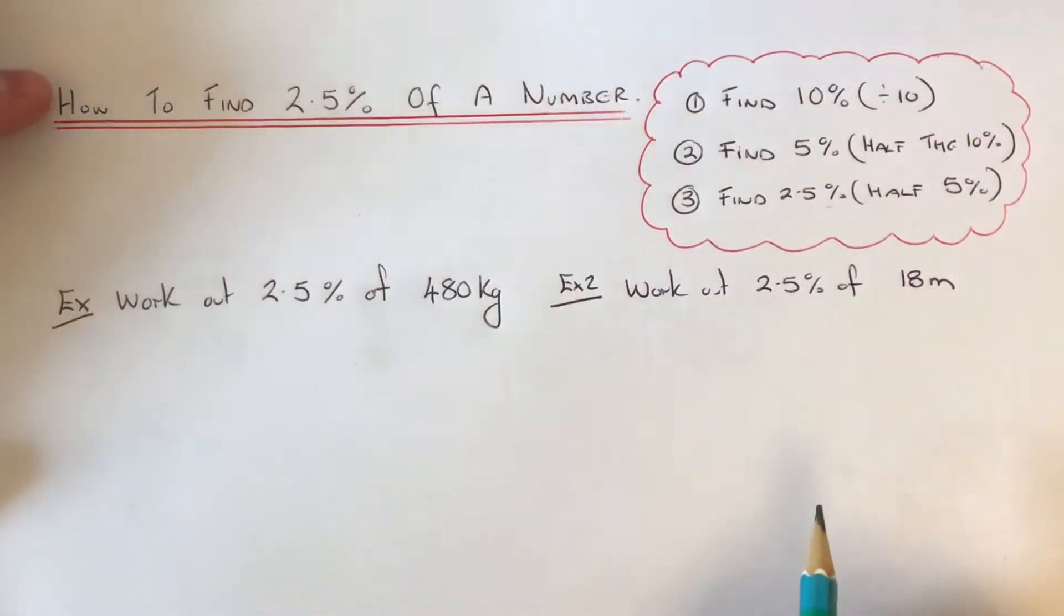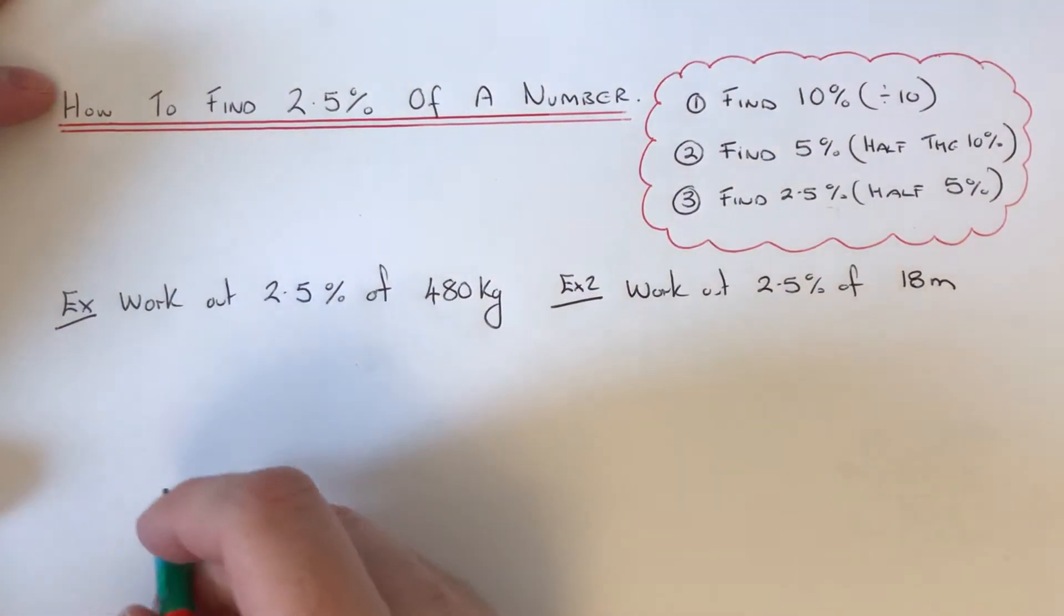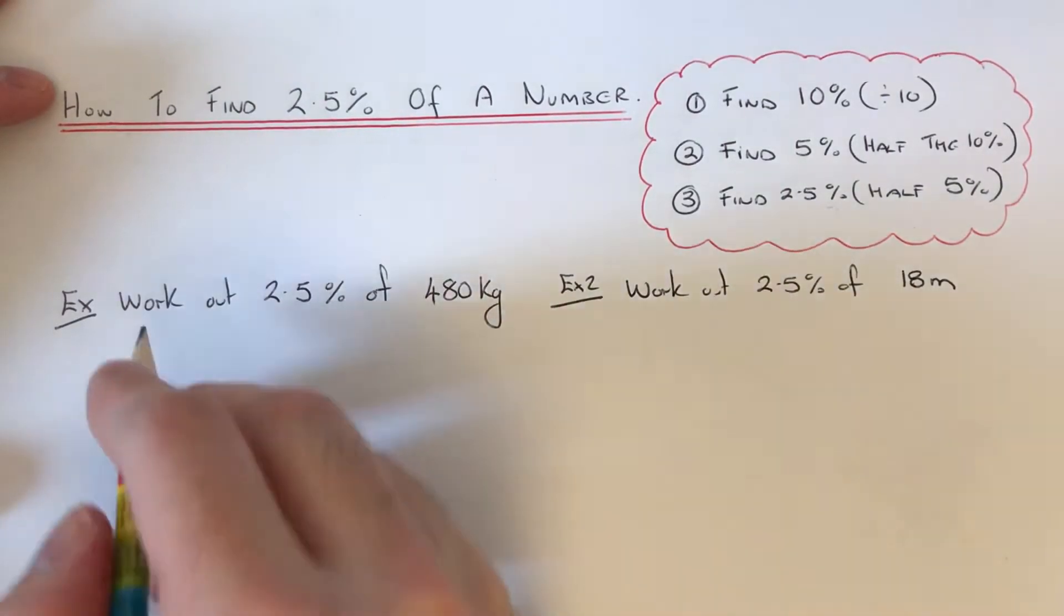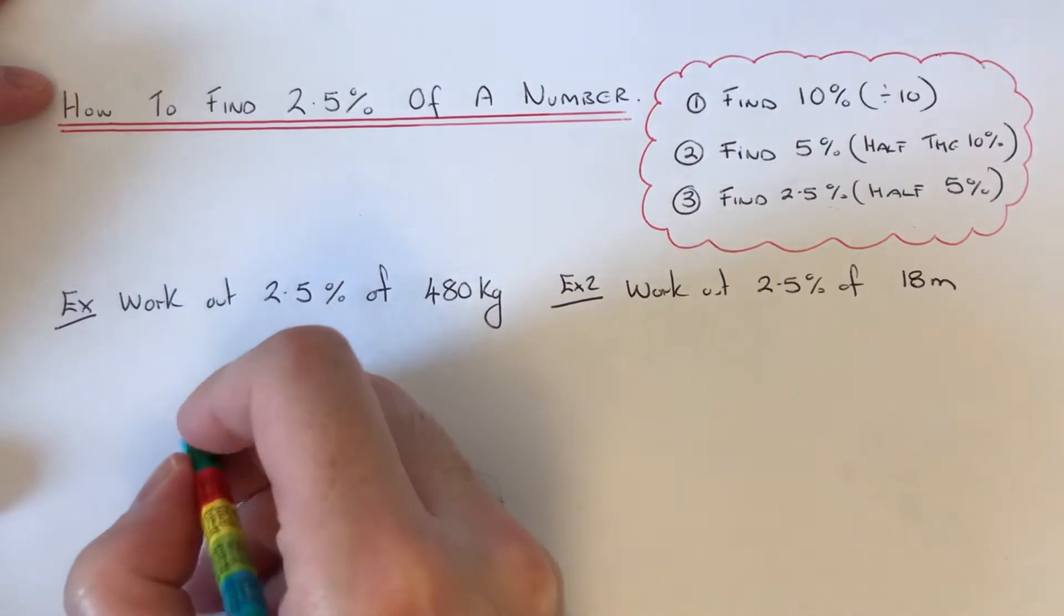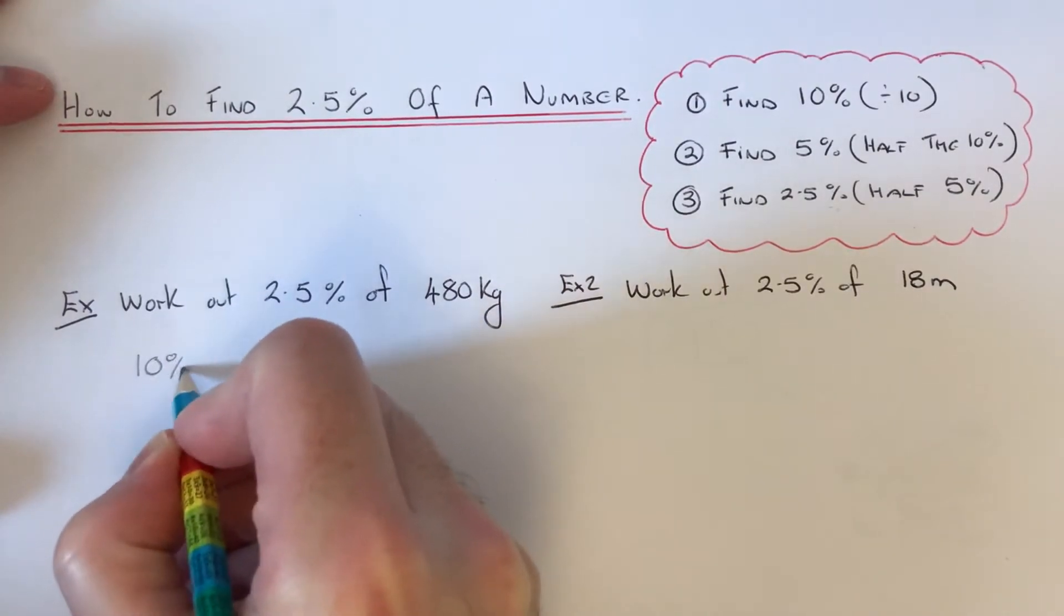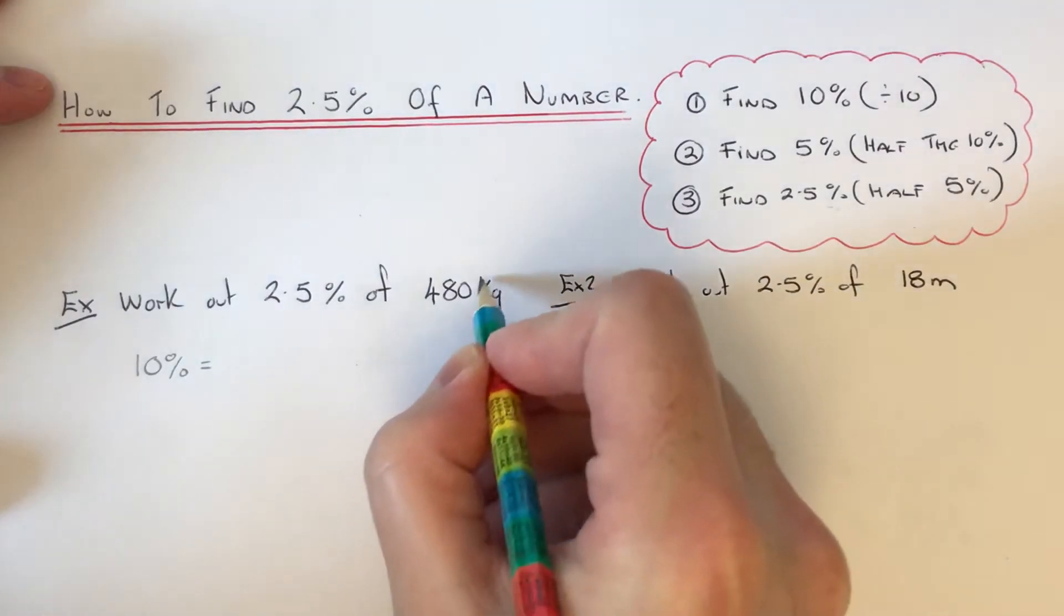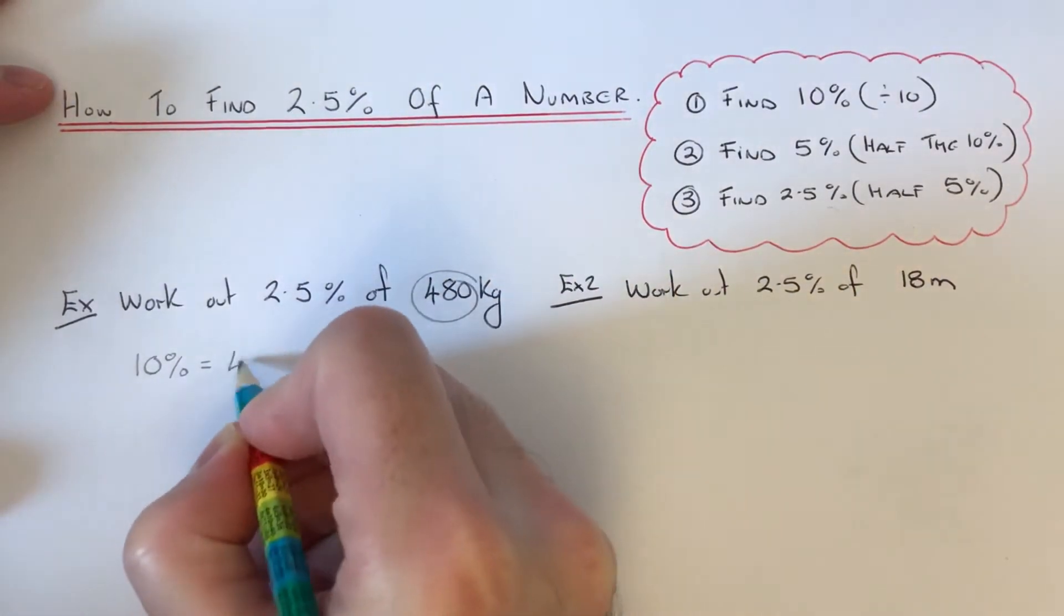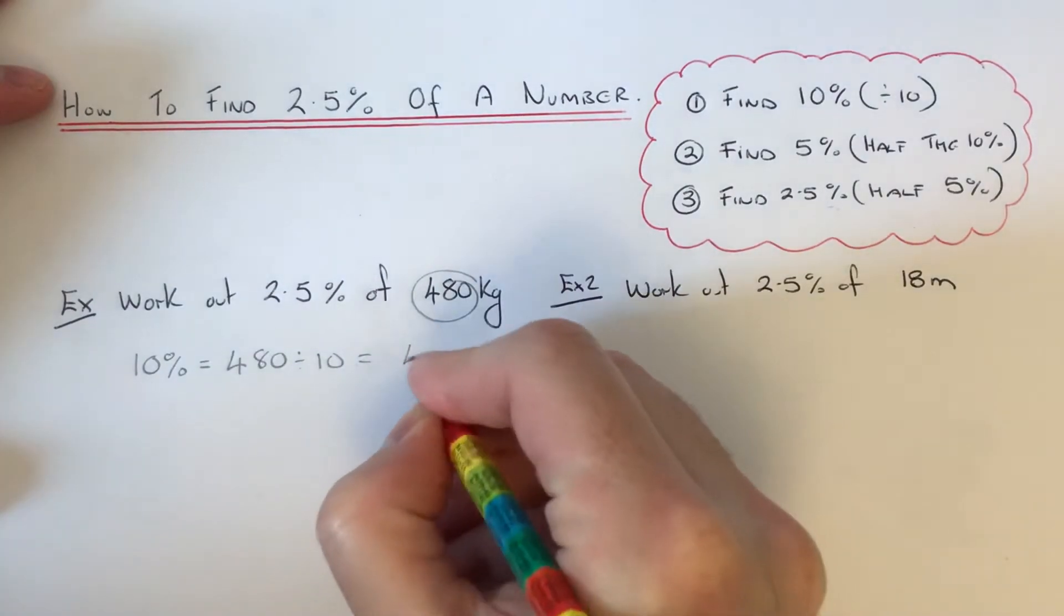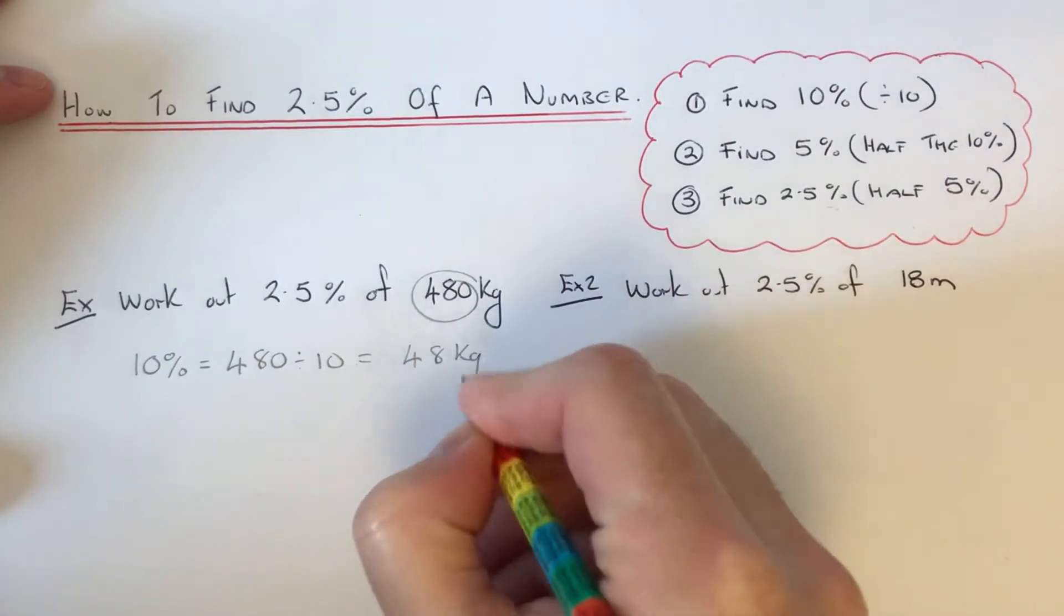So let's have a look at the two examples here. The first one is to work out 2.5% of 480 kilograms. So first of all, work out 10%. To get 10%, we just need to divide 480 by 10, which is 48 kilograms.